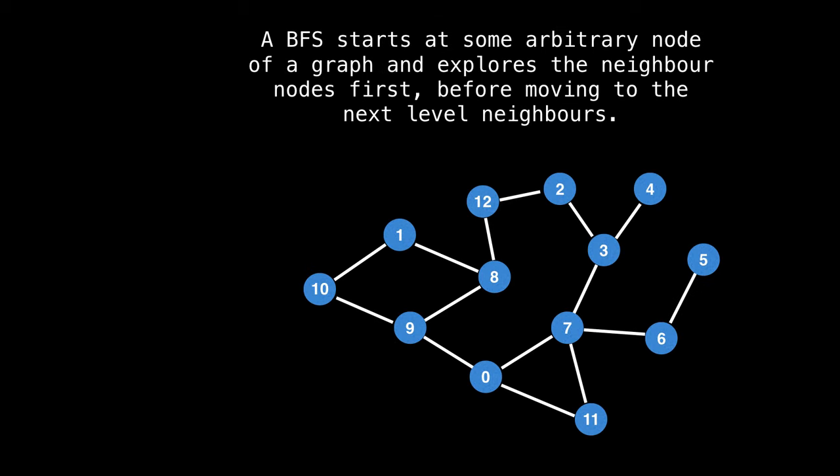A breadth first search starts at a node in the graph and explores its neighbor nodes first before moving on to explore the next level of neighbors. In a sense, a breadth first search explores nodes in layers.